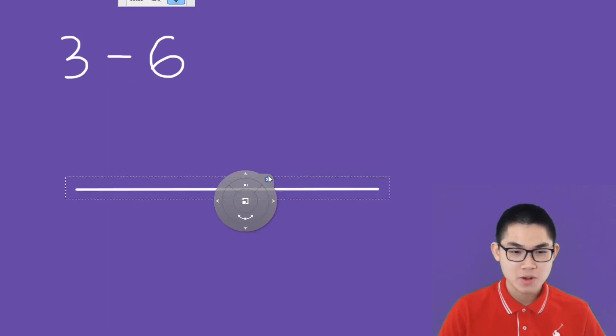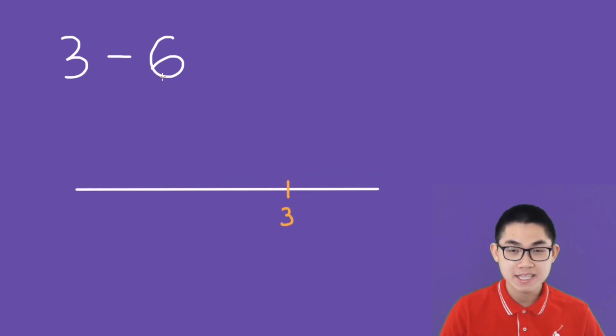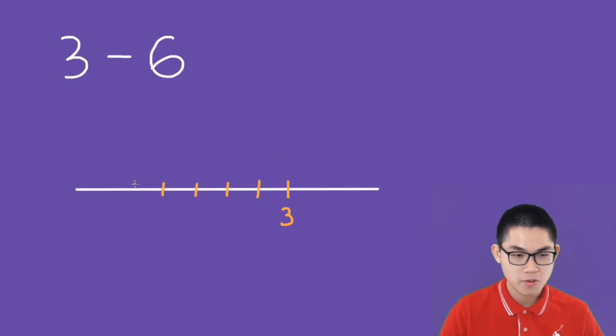So let's start with 3 minus 6. We're going to create a number line, so we start at 3. When we minus 6, it means we move to the left 6 times: 1, 2, 3, 4, 5, 6.